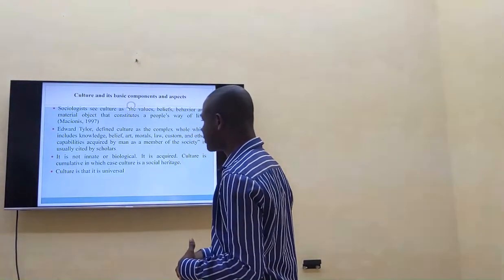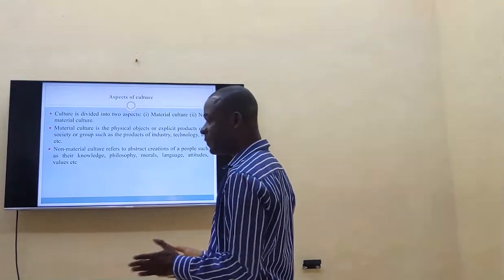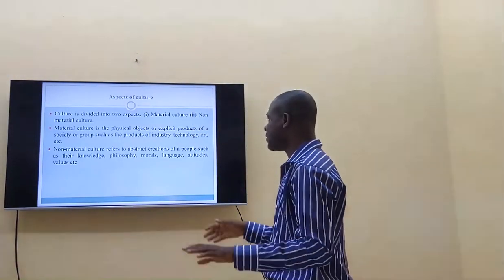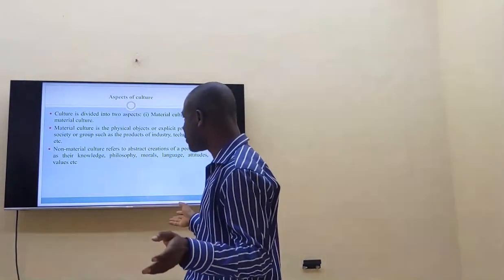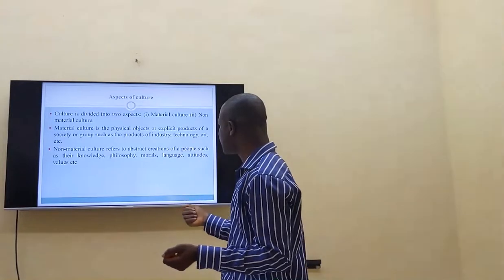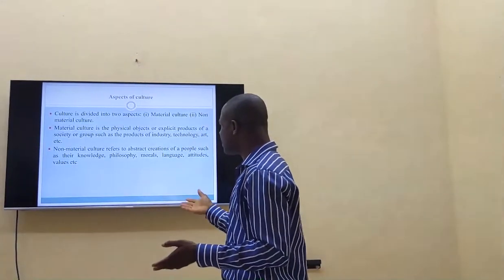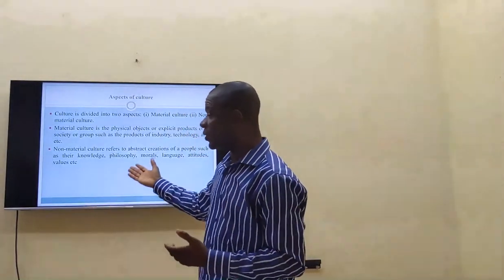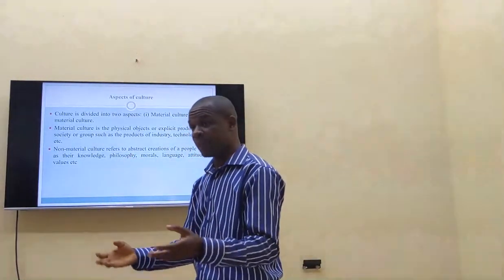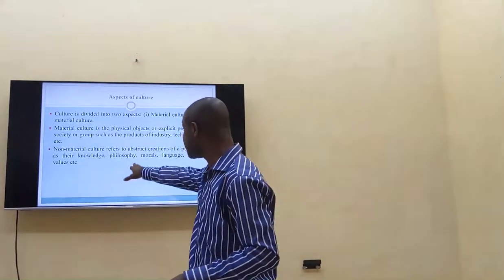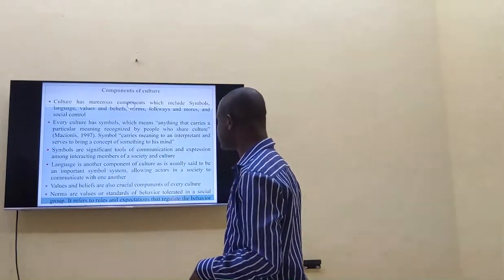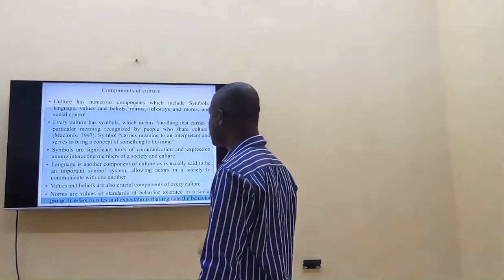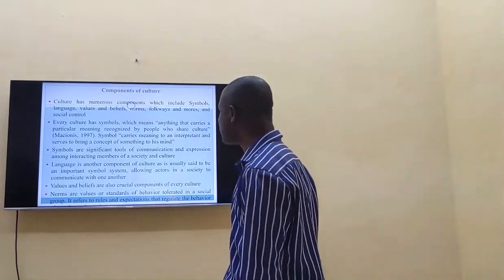Culture is divided into two aspects: the material aspect and the non-material aspect. The material aspect includes things we can touch — our technology, tools, and everything tangible. The non-material aspect includes our philosophy, the things that we believe, and our morals — the ones that we cannot see. We classify those among the non-material aspect of our culture.